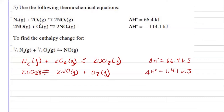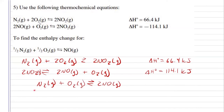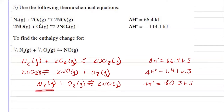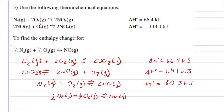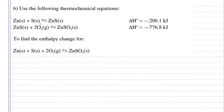Looking at what species are going to cancel, I have the two nitrogen dioxide molecules that will cancel. This oxygen molecule will cancel out one of them. So, I'm going to end up with the nitrogen molecule plus one oxygen molecule is going to give me two nitrogen monoxide. Adding those enthalpies together, I get a change of 180.5 kilojoules, but that's not what the problem is asking us for. We actually solved for twice as much — this one is half a mole of nitrogen and oxygen. So, I'm just going to divide my reaction by two, giving me an enthalpy of the reaction of 90.3 kilojoules.